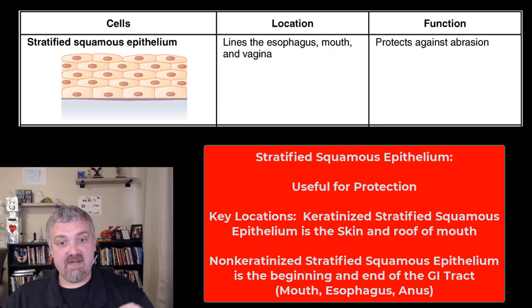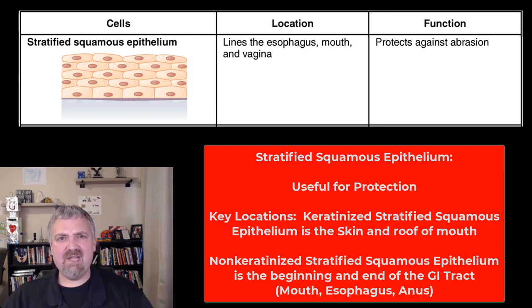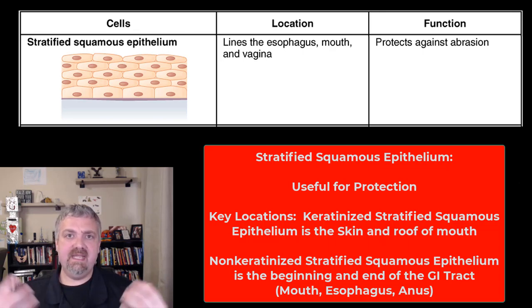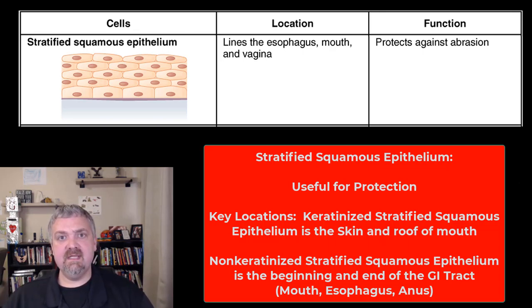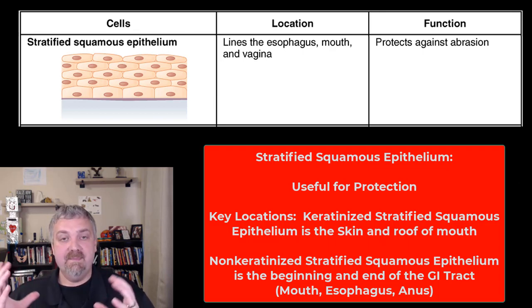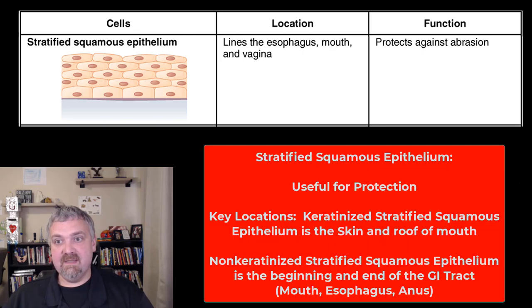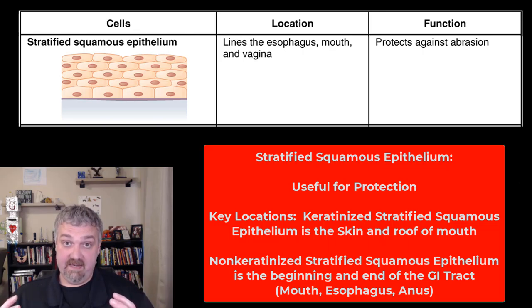We have keratinized stratified squamous epithelium. These cells are going to be packed with this water-resistant protein called keratin. This is going to be your skin — skin is a keratinized stratified squamous epithelium — and the roof of your mouth has some as well. The benefit of keratinized stratified squamous epithelium is these areas don't need to be constantly lubricated.